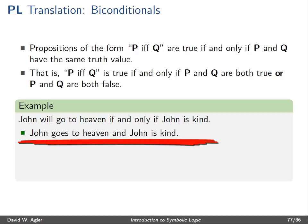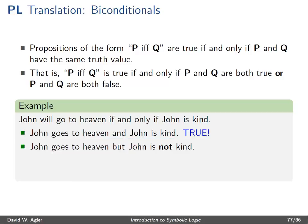Suppose that John goes to heaven and John is kind. Since the if and only if statement says that John will go to heaven if and only if he is kind, and we have that John goes to heaven and he is kind, this scenario would make the statement true. Second, suppose John goes to heaven but John is not kind — he is a horrible person. Part of what the if and only if statement asserts is that on the condition that John goes to heaven, then he is kind. Since that condition fails here, this state of affairs would make the if and only if statement false.